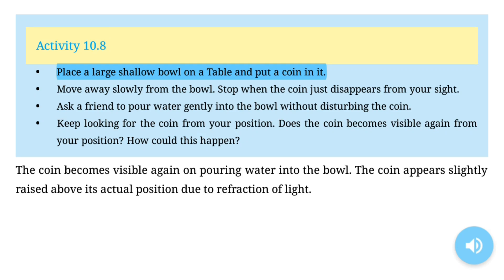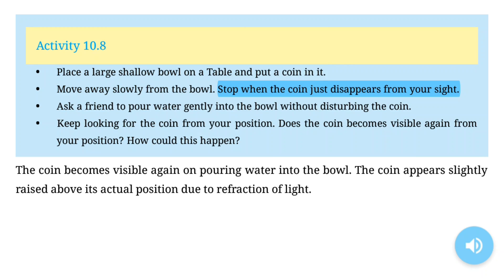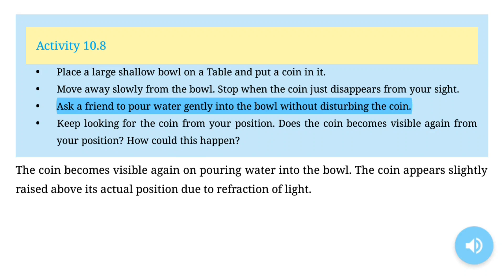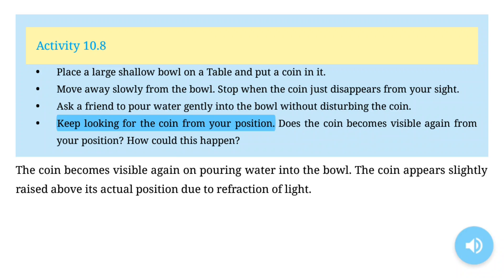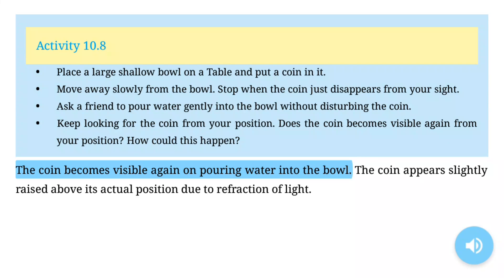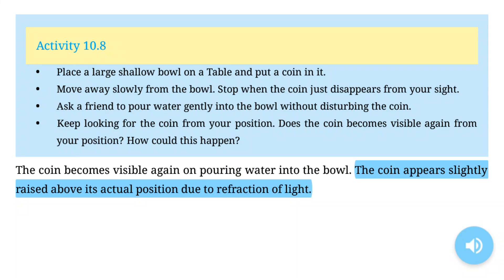Activity 10.8: Place a large shallow bowl on a table and put a coin in it. Move away slowly from the bowl. Stop when the coin just disappears from your sight. Ask a friend to pour water gently into the bowl without disturbing the coin. Keep looking for the coin from your position. Does the coin become visible again? The coin becomes visible again on pouring water into the bowl. The coin appears slightly raised above its actual position due to refraction of light.